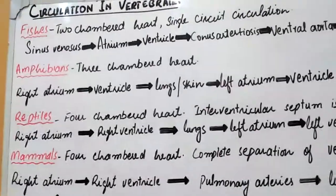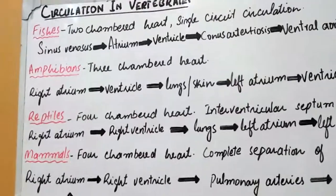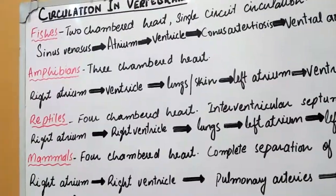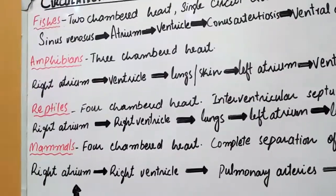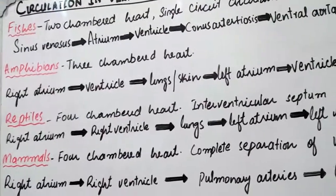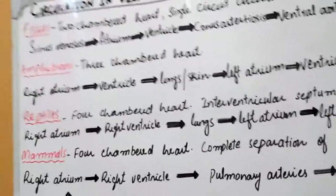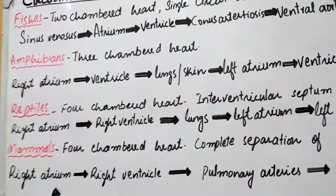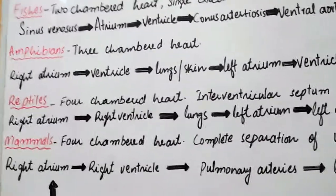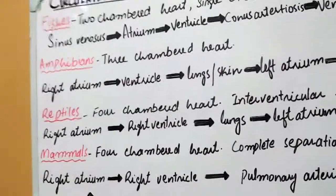Next are the amphibians. Amphibians, reptiles, and birds all have double circuit circulation. In the case of amphibians, the heart is three-chambered, meaning they have two atria and one ventricle.